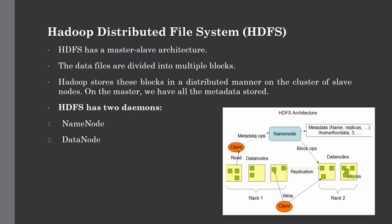HDFS has a master-slave architecture. The master is a high-end machine whereas the slaves are commodity hardware. In HDFS, data files are divided into multiple blocks — preferably each block has a size of 128 MB or 256 MB by default. For example, if we have a 1 GB file and the block size is 128 MB, it will be divided into 7 to 8 blocks. These blocks are stored in a distributed fashion on clusters of slave nodes, while on the master, the metadata resides — it holds the address and all information about the blocks stored in the slave nodes.